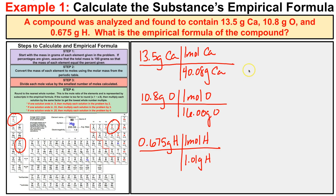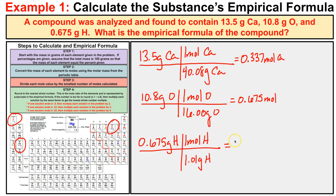After dividing, we end up with 0.337 moles of calcium, 0.675 moles of oxygen, and 0.668 moles of hydrogen. Step two is complete — we've determined the number of moles of each element in the compound.